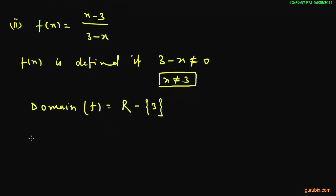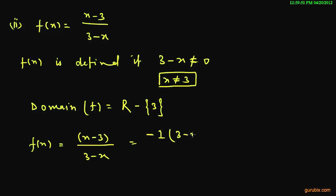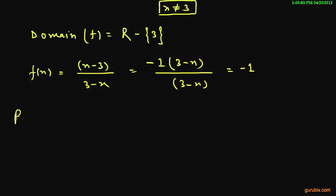Now we shall find the range of the function. f(x) is given as x minus 3 over 3 minus x. We can factor out negative 1 from the numerator: x minus 3 equals negative 1 times 3 minus x. So the expression simplifies to negative 1, meaning the range of the function f(x) is the set containing only negative 1.